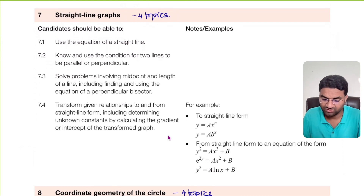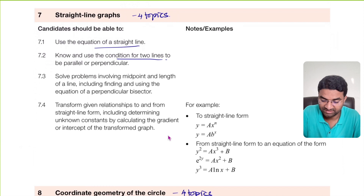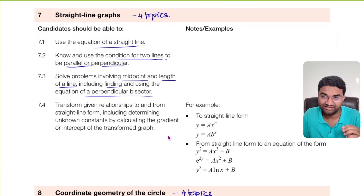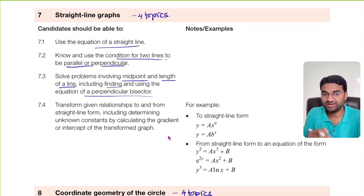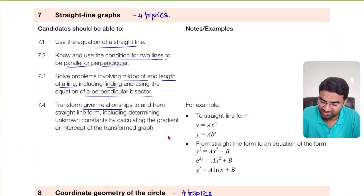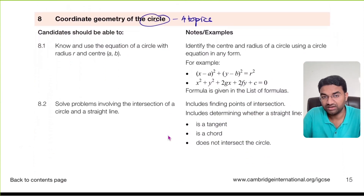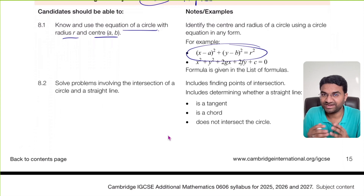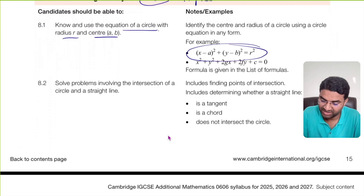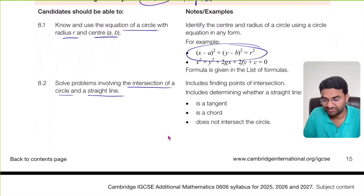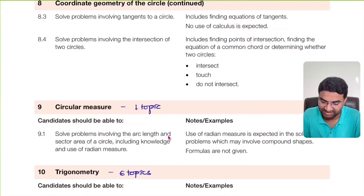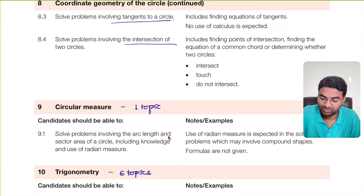Straight Line Graphs covers four topics: equation of a straight line, conditions for two lines to be parallel or perpendicular, midpoint and length of a line including the equation of a perpendicular bisector, and transforming relationships into straight line form by calculating gradient and intercept. Coordinate Geometry of a Circle covers the equation in the form (x − a)² + (y − b)² = r², intersection of a circle and straight line (solved simultaneously), tangents to a circle, and intersection of two circles.